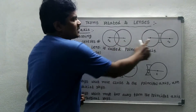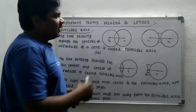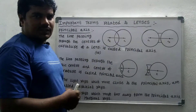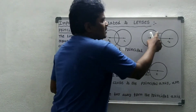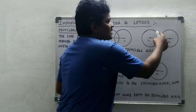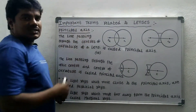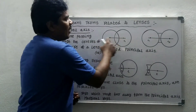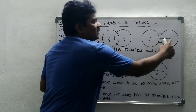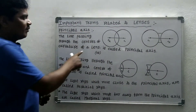Next: principal axis. For a lens, we construct two spheres — one for each surface. For the first surface, the center of curvature is C1; for the second surface, it is C2. This applies to both convex and concave lenses. The line passing through the centers of curvature of a lens is called the principal axis.